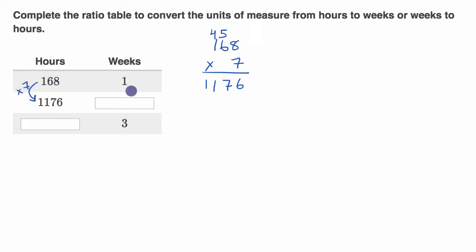We multiplied the number of hours by seven, so that means we're gonna have seven times as many weeks. So one times seven is seven weeks. Now what about a situation where we have three weeks? How many hours is that going to be? Well, we are multiplying our weeks by three, so we would want to multiply our hours times three. So 168 times three, eight times three is 24, six times three is 18 plus two is 20, and then one times three is three plus two is five. So that would be 504 hours.